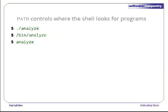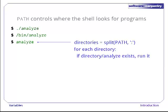But what should the shell do if we just type 'analyze'? There are at least two things it could run. How should it choose? Its rule is simple. The shell checks each directory in the PATH variable in turn, looking for a program with the requested name in that directory. As soon as it finds a match, it stops searching and runs the program.